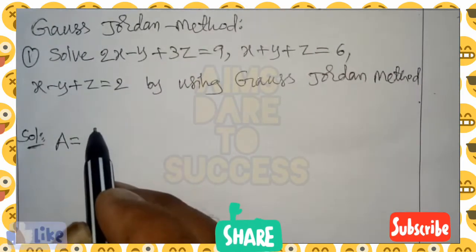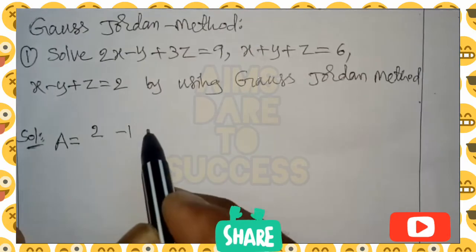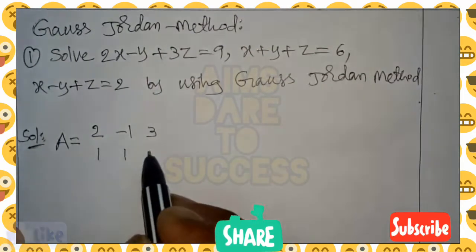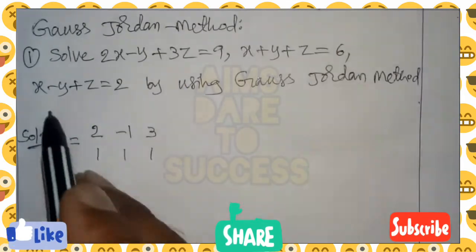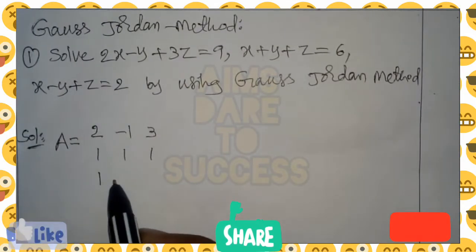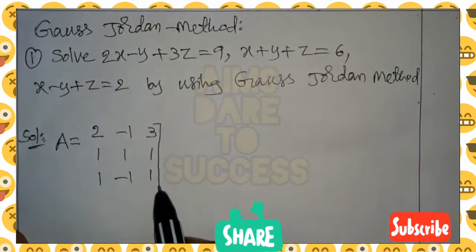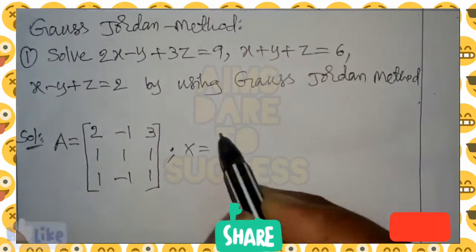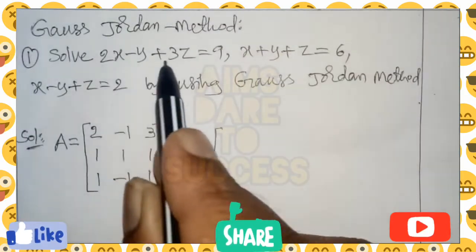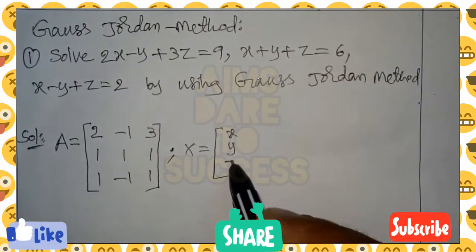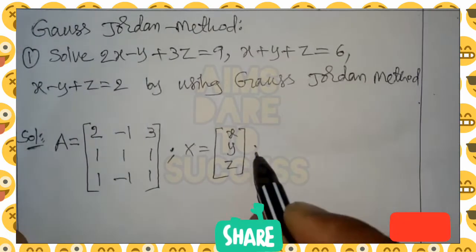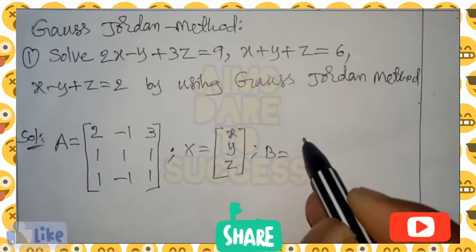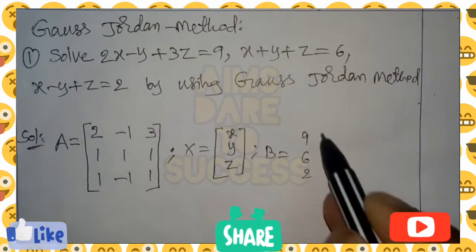Now we can write A as the matrix of xyz coefficients from the given three equations. We get: 2, minus 1, 3; then 1, 1, 1; then 1, minus 1, 1. After writing the A matrix, next we write X — the variables from the given three equations, xyz, written in column-wise standing position. Next, B matrix: the right-side constant terms written column-wise, that is 9, 6, 2.